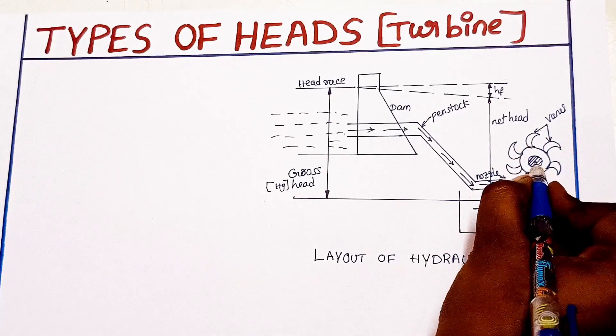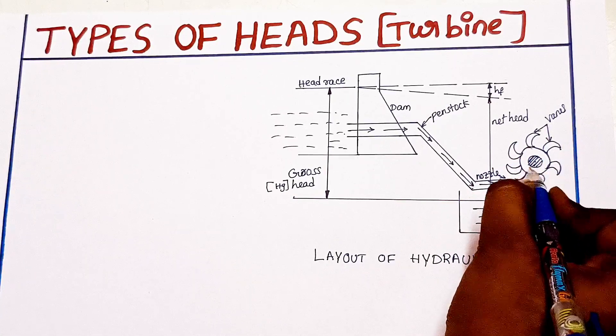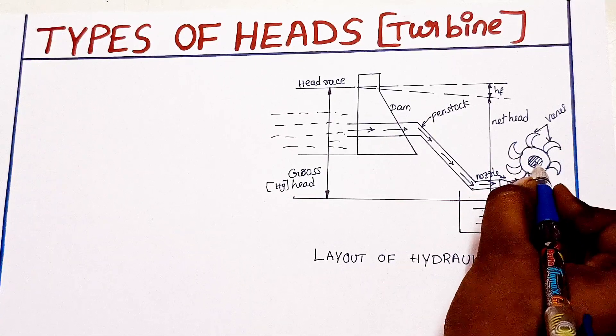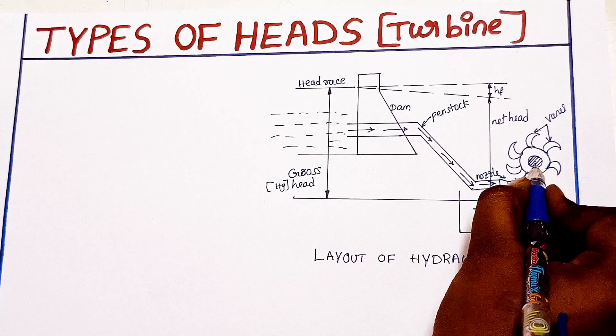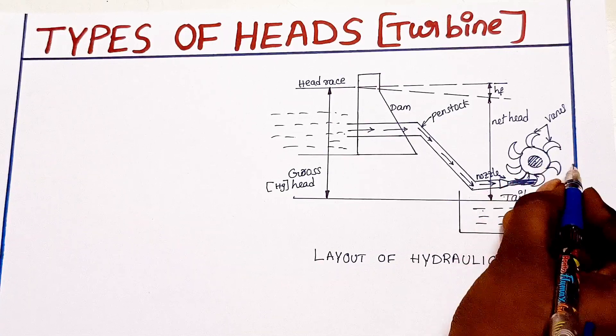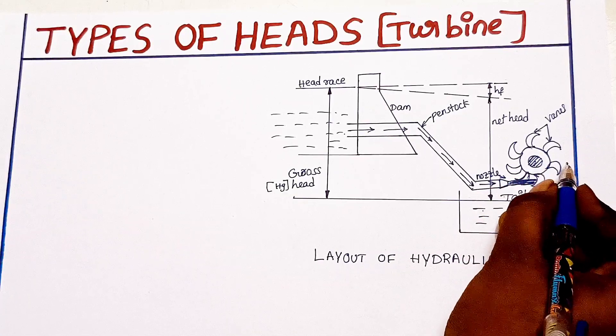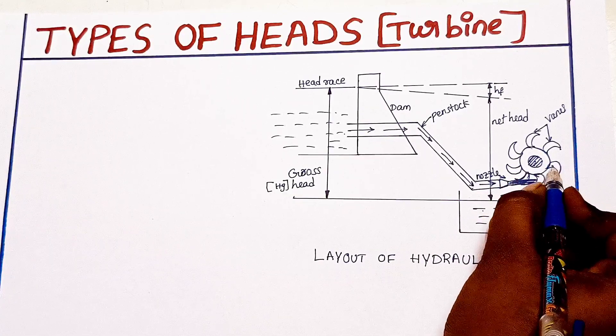The turbine is connected to a shaft. The shaft is built up so that it can turn an electrical generator.